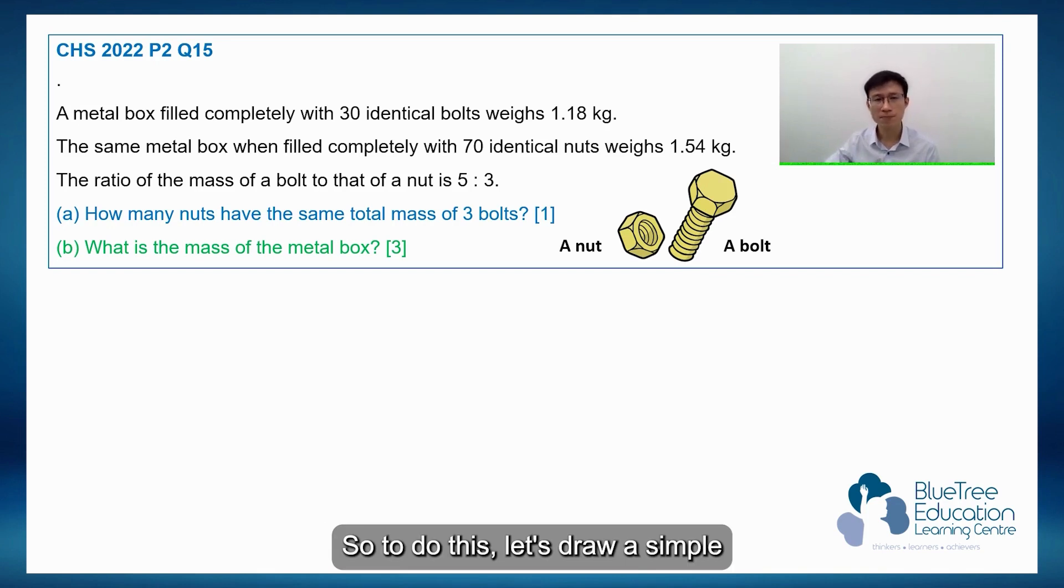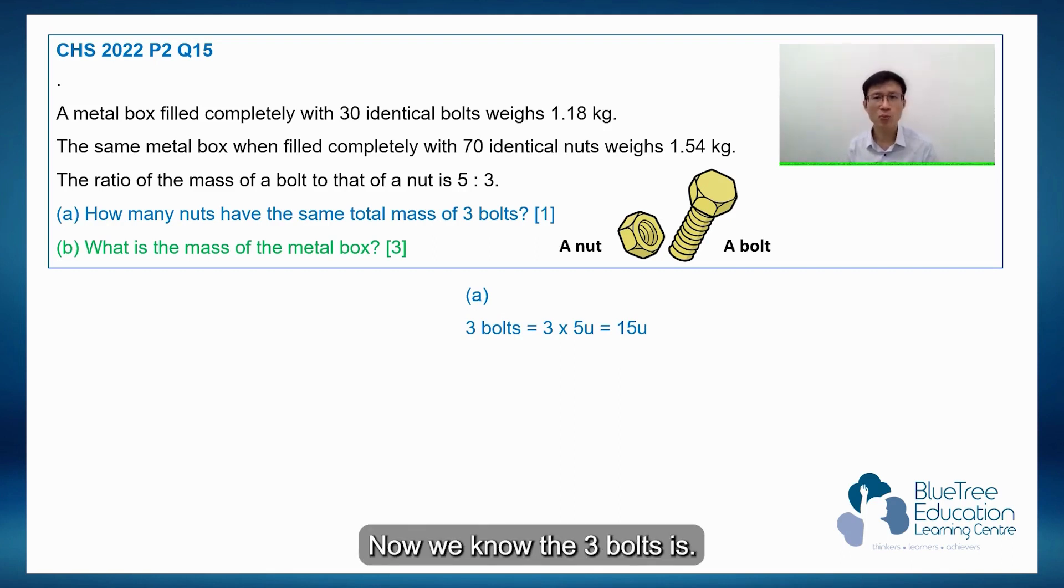So to do this, let's draw a simple illustration. Now we know that 3 bolts is, we know the mass of a bolt to that of a nut is 5 to 3. So one bolt will have 5 units. One nut is 3 units.